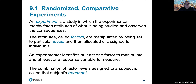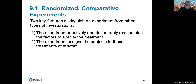In an experiment, the researcher actually controls who is exposed to what, and by having such control is then able to measure cause and effect with regards to the experimental design.